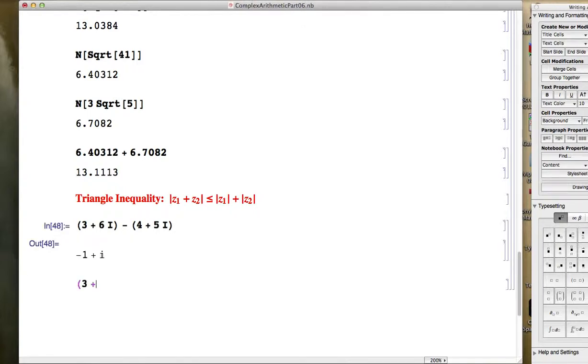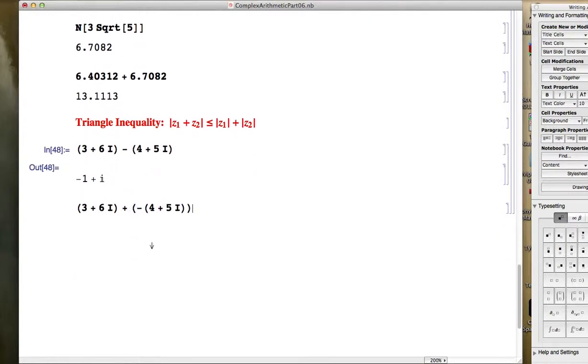One way this can be interpreted geometrically is motivated by the fact that subtractions can always be thought of as additions. You can write that subtraction as 3 plus 6i plus the additive inverse of 4 plus 5i, the opposite of 4 plus 5i if you prefer, which is, as you might guess, negative 4 minus 5i.